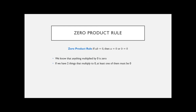The zero product rule is very simple. If you have two things multiplied together and they equal zero — A times B equals zero — then either A is equal to zero or B is equal to zero. Because when you do multiplication and your answer is zero, one of those numbers has to be zero. Anything times zero is zero; we just don't know which one is zero. So we get two possible answers. We use this with quadratics because X squared means you have two things multiplied together — X times X — so we're going to get two solutions.